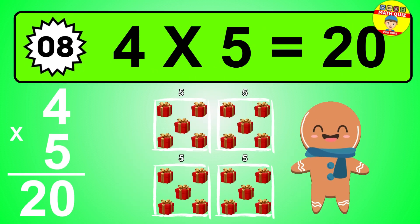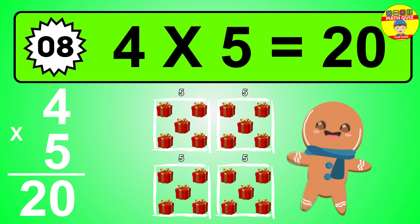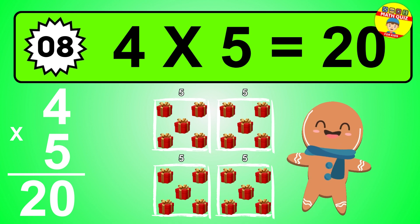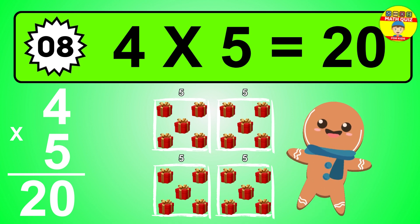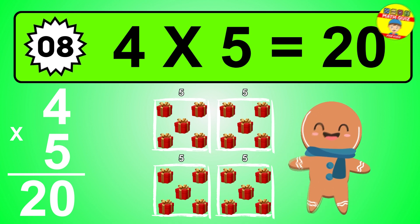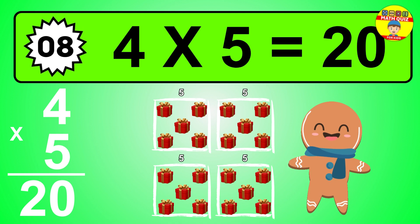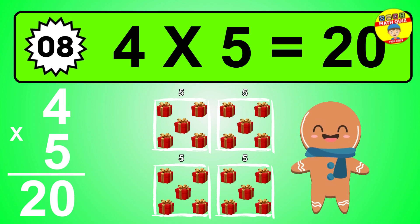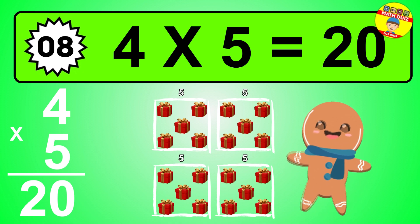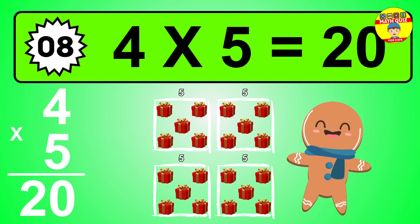The answer is four times five is twenty. To calculate, we have four groups with five balls each one. So how many balls do we have? Twenty balls.